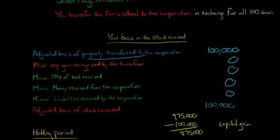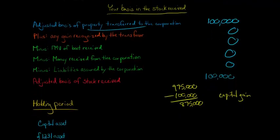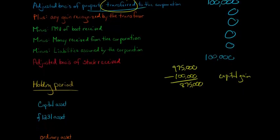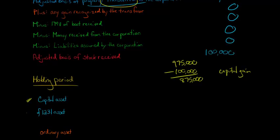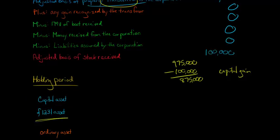To determine the holding period, it depends what type of property was transferred to the corporation to begin with. There are three types of assets. It could be a capital asset — for example, if you had transferred your house. It could be a Section 1231 asset, which is basically some kind of depreciable property — the Ferris wheel could be a Section 1231 asset if you had been a sole proprietor running an amusement park and depreciating the Ferris wheel. Or it could be an ordinary asset.